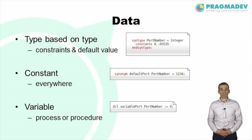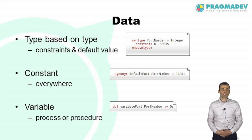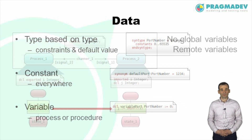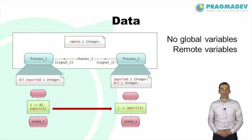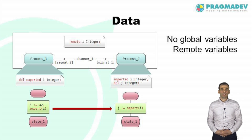SDL supports declaration of constants and variables based on predefined or user-defined data types. Constants are declared at any level — system, block, process, or procedure — and their values cannot be changed. Variables, on the other hand, are declared inside a process or a procedure, and are visible and can be modified only inside that process or procedure. Global variables accessible by all processes are not supported. However, it is possible for a process to make its variables visible in other parts of the system — these are called remote variables, and although they are visible in other processes, they cannot be modified by them.